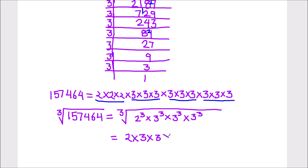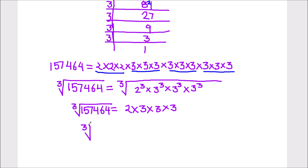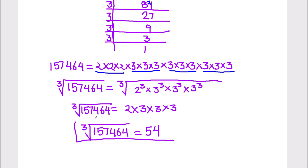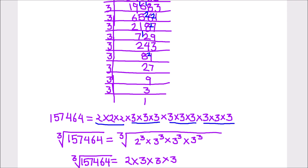So this is going to be 2 times 3 times 3 times 3. The cube root of 1,57,464 equals 2 times 3 is 6, 6 times 3 is 18, and 18 times 3 is 54. So the cube root of 1,57,464 is 54. This is how we find the cube root of any number.